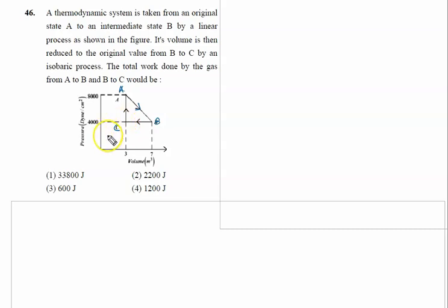The total work done by the gas from A to B and B to C. One thing is very important here: when the gas is moving from A to B it is expanding so work is positive. But when the gas is moving from B to C, volume is decreasing, compressing, so work done will be negative.